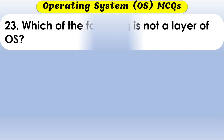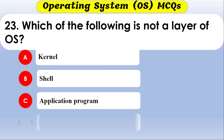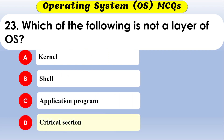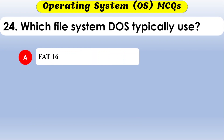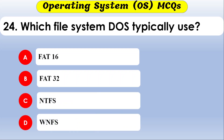Which is not a layer of an OS? The options include application program, critical section, and others. The correct option is critical section — it is not a layer of the OS.